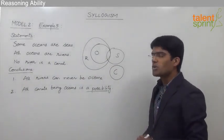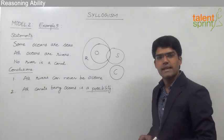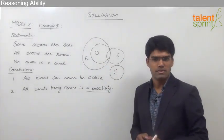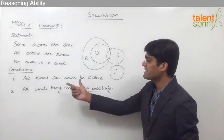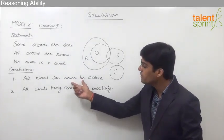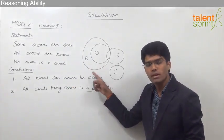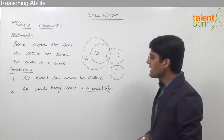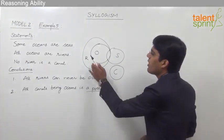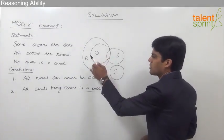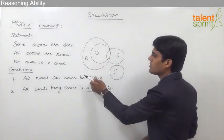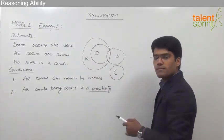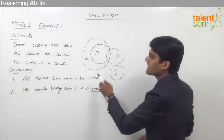Let us now see which conclusions follow from the basic diagram. The first conclusion is all rivers can never be oceans, and this is a definite conclusion, so it must be true not only in the basic diagram but in all possible cases. In the basic diagram, all rivers are not oceans, so the first conclusion is true here.